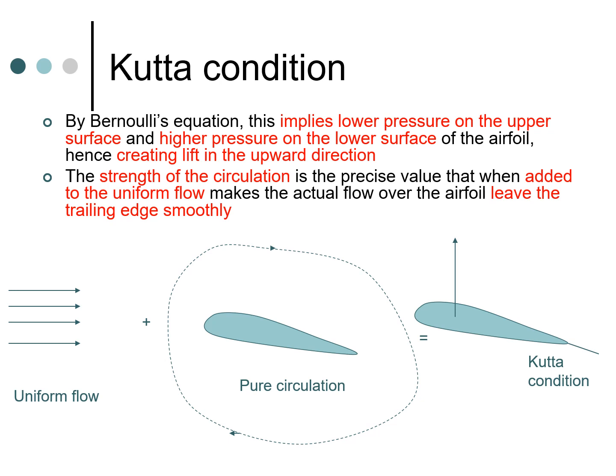There is a uniform flow which is coming and there is a circulation which is getting created so that the Kutta condition is satisfied, and that is essentially going to result in the generation of lift on the airfoil, which is your primary objective as far as flying the aircraft is concerned. So these are some important concepts.